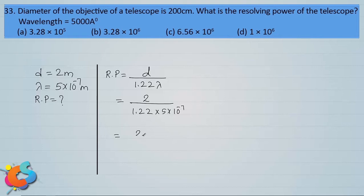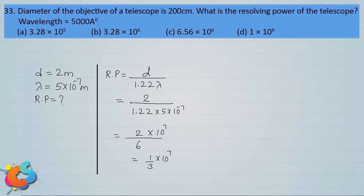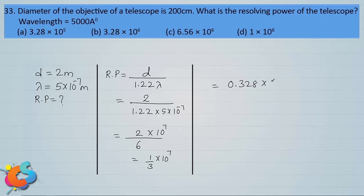Simplification: in the numerator I have 2 and in the denominator it is 5 into 1.22, which is slightly greater than 6. Approximately writing this as 6, and taking 10 power minus 7 to the numerator gives 10 power plus 7, so this is approximately 1 by 3 into 10 power 7. Since the denominator is slightly greater than 3, the fraction is slightly less than 0.33, approximately 0.328 into 10 power 7, which is 3.28 into 10 power 6.